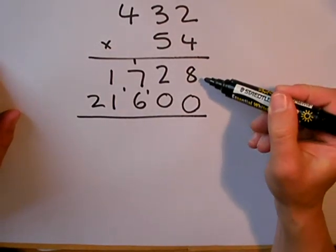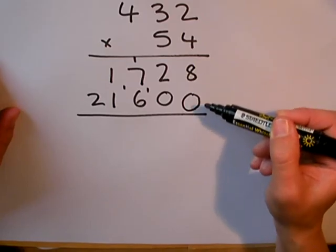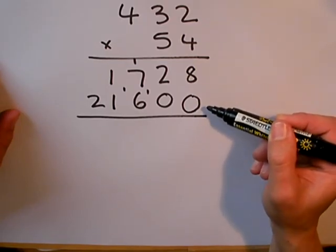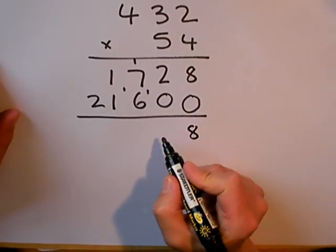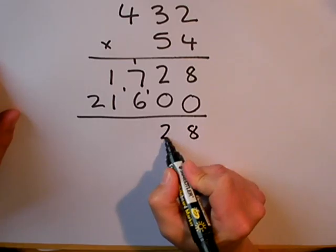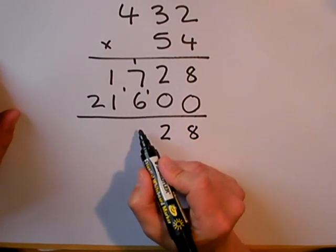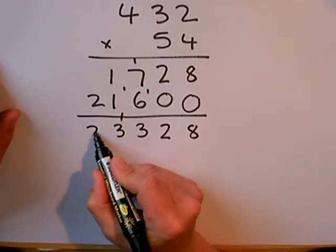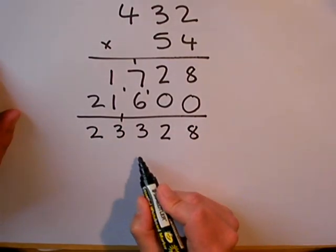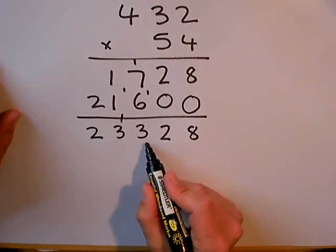Again, I have an answer, 432 multiplied by 4, and 432 multiplied by 50. If I add these two together, I'll get the answer to 432 multiplied by 54. 7, 6, 13, 3, and 2. My answer is 23,328.